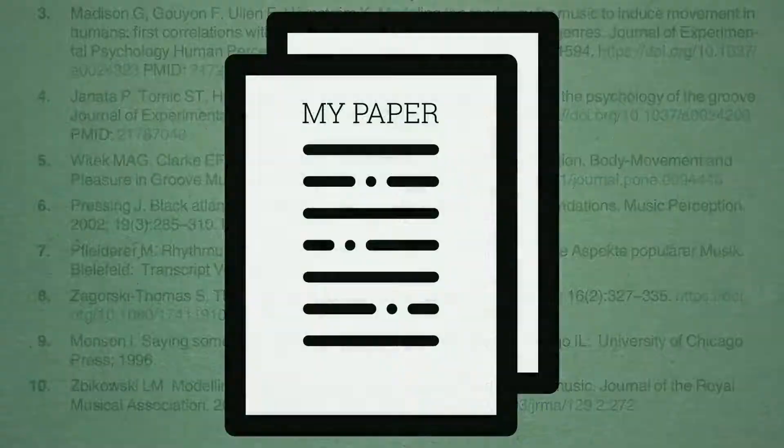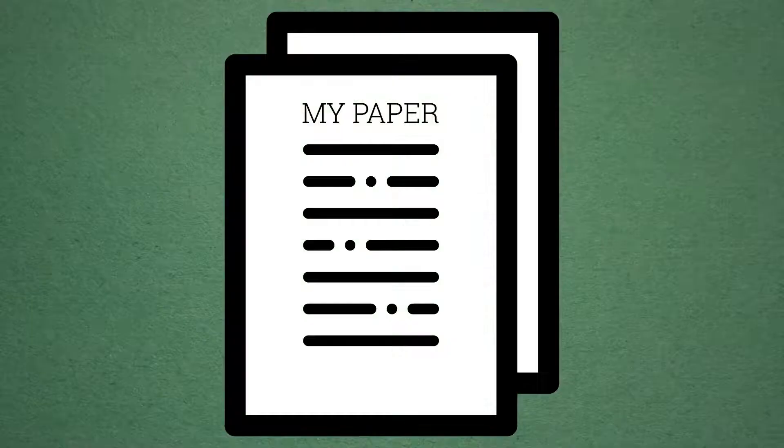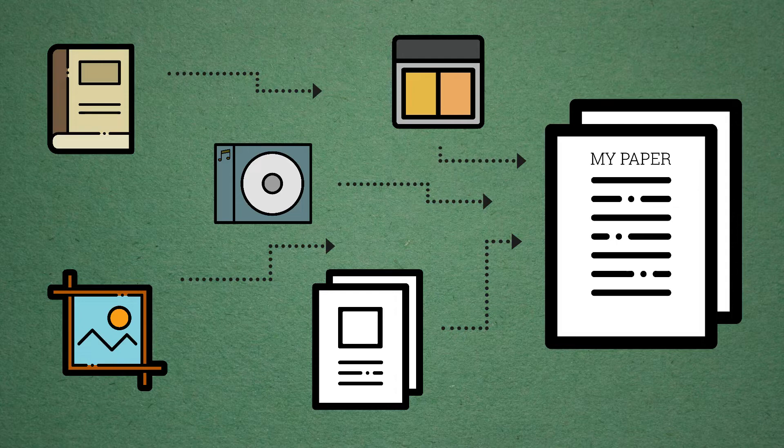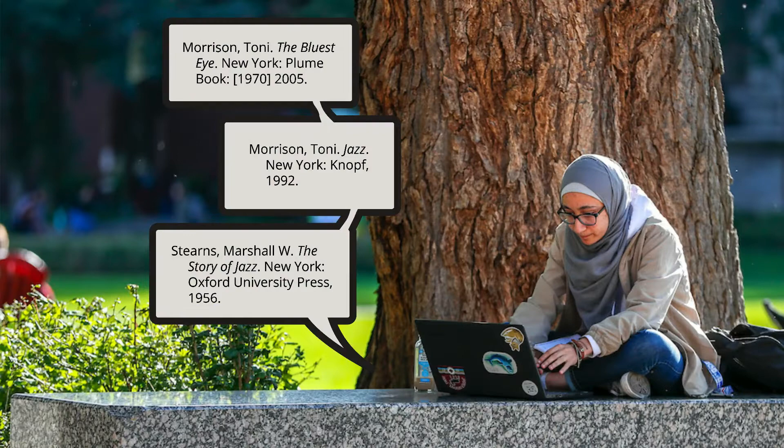Why are citations important? Citations are important because they demonstrate the scope of our research and the path we took to get there. Think of citations like a trail. Other scholars can follow the research trail to find the sources you use. They might even use the same sources in their own research. Since the reader can follow your research trail, they can trust what you write.